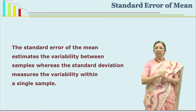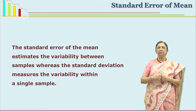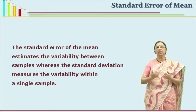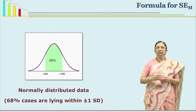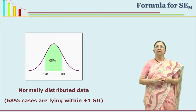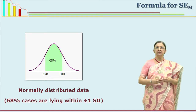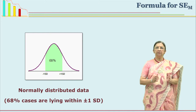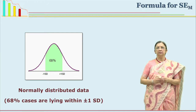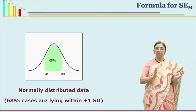Standard deviation is for the sample. For the population, we don't use standard deviation; we use standard error of mean. In effect, it is also a standard deviation, but it is the standard deviation of the population mean. To brush up your information about standard deviation, please see this diagram. If the population is normally distributed, you will have 68 percent of cases lying between minus 1 SD and plus 1 SD from the mean.